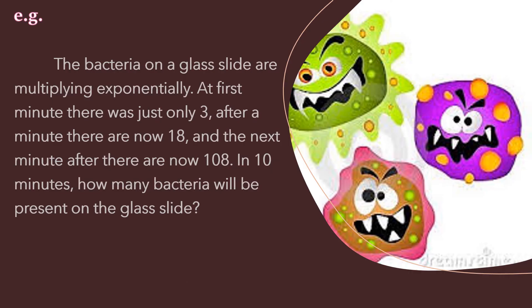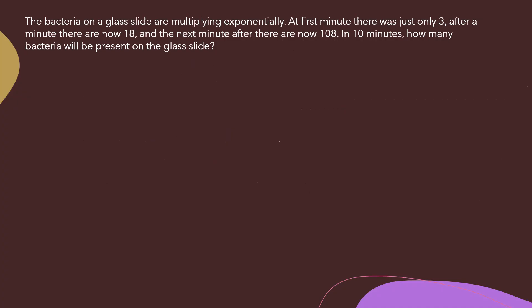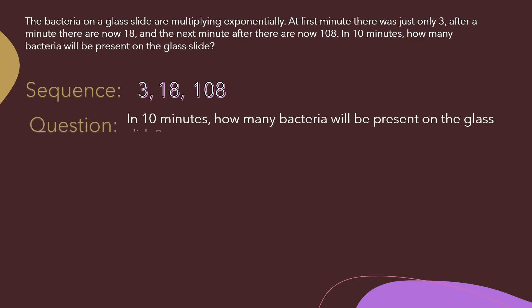The bacteria on a glass slide are multiplying exponentially. At the first minute there were just 3. After a minute there are now 18. The next minute there are now 108. In 10 minutes, how many bacteria will be present on the glass slide? We first gather information: the sequence is 3, 18, 108, which falls under geometric sequence, and we need to find the amount after 10 minutes.